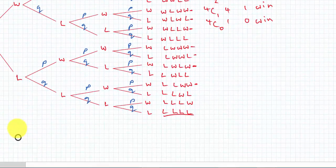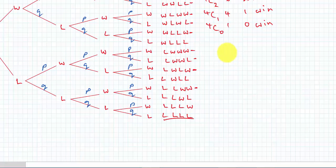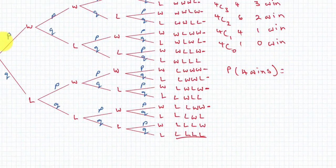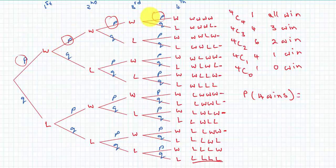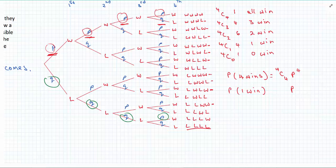The next thing is the actual probability. So if the question asks for probability of four wins, then probability of four wins would be multiplying p by p by p by p. That's p to the four. And it happens only once. So that was four choose four, p to the four.